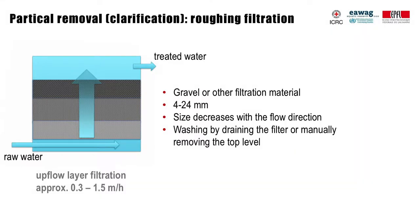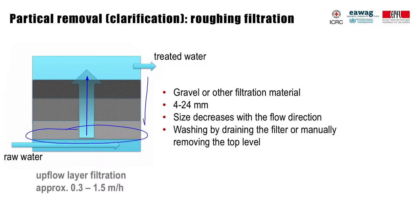For rather turbid waters, roughing filters can be used prior to rapid or slow sand filtration or disinfection. Differently sized coarse material is used in roughing filters, and the size decreases in the direction of flow. There are different configurations — upflow, downflow or horizontal flow. In an upflow filter, water moves from bottom to top and the retained solids accumulate predominantly at the bottom of the filter. They can be flushed out by reversing the flow or simply draining the filter.